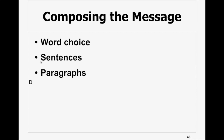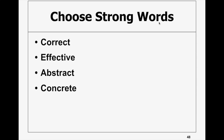What kind of variety do you use in sentences? We will also talk about that. For paragraphs, what are the different elements and how can an effective paragraph be developed? In composing the message, we will first talk about word choice. Words are very important, and when you have to choose words for writing — for business writing — you have to focus on four things: words should be correct, they should be effective, and you have to make a selection between abstract and concrete.